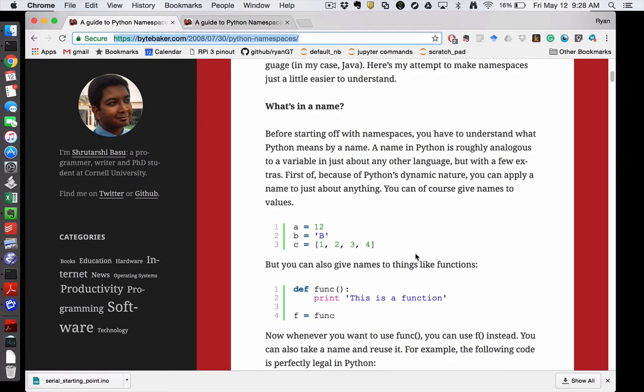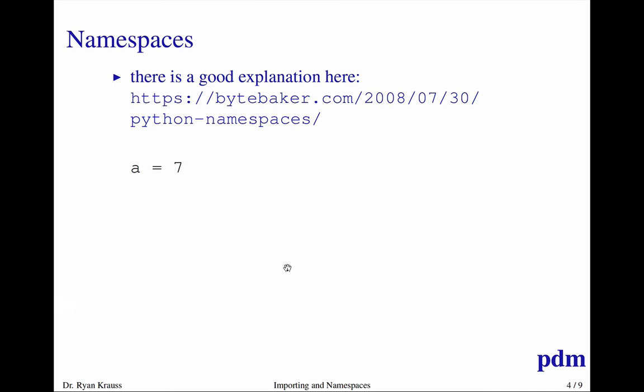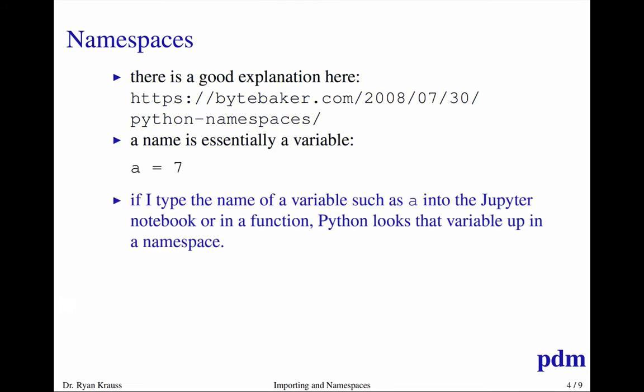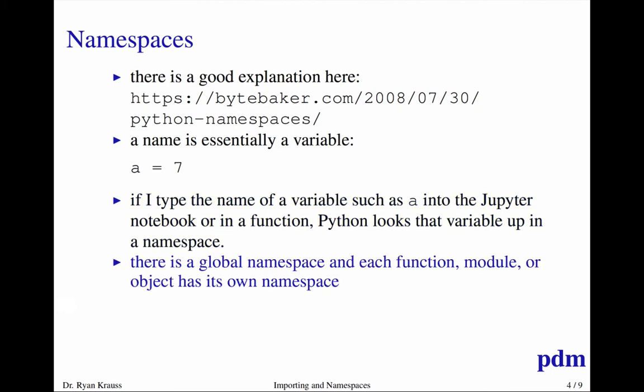But a name is essentially these ABC things over here that refer to the actual variable contents. If you just typed A into your Jupyter Notebook or an IPython console or in a function, Python would have to somehow know what A refers to, and it would look up A in some kind of namespace. If you're at the very top level of a script or you're in the main part of the Jupyter Notebook, you might be working in the global namespace, and that's an important one. But each function, module, or object also has its own namespace.